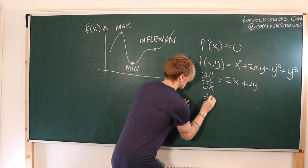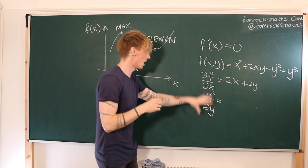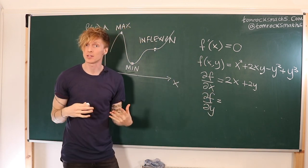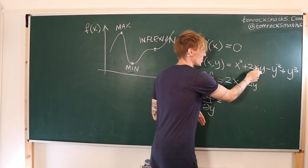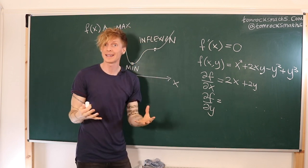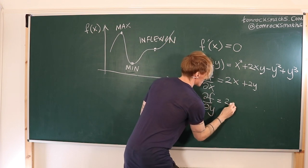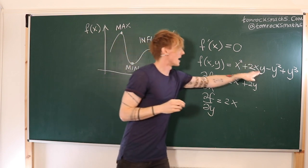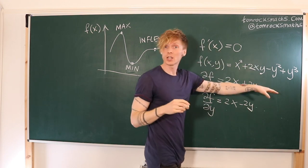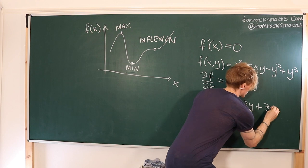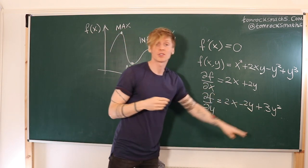Now I also need to know df/dy, differentiating with respect to y and treating x as a constant. So x squared is a constant and differentiates to give 0. Then 2x is a constant and the y to the power 1 differentiates to give 1, so I get 2x. Then minus y squared differentiates with respect to y to give minus 2y. And y cubed differentiates to give plus 3y squared. So my y partial derivative df/dy is 2x minus 2y plus 3y squared.